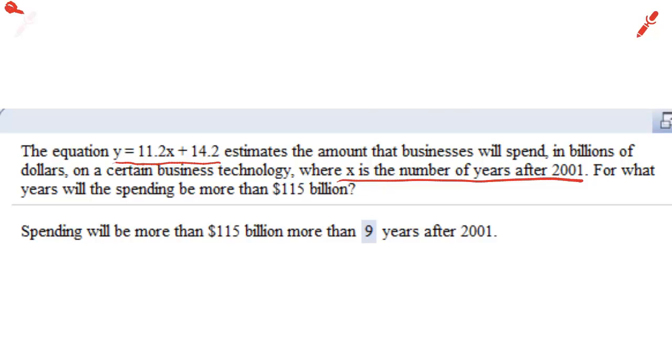So the year 2001 can be expressed as x equals zero because if x is the years after 2001, then zero would be the number of years after 2001, if it's 2001. On the other hand, 2002 would be x equals one. Because 2002 is one year after 2001. And the year 2003 would be x equals two because 2003 is two years after 2001.